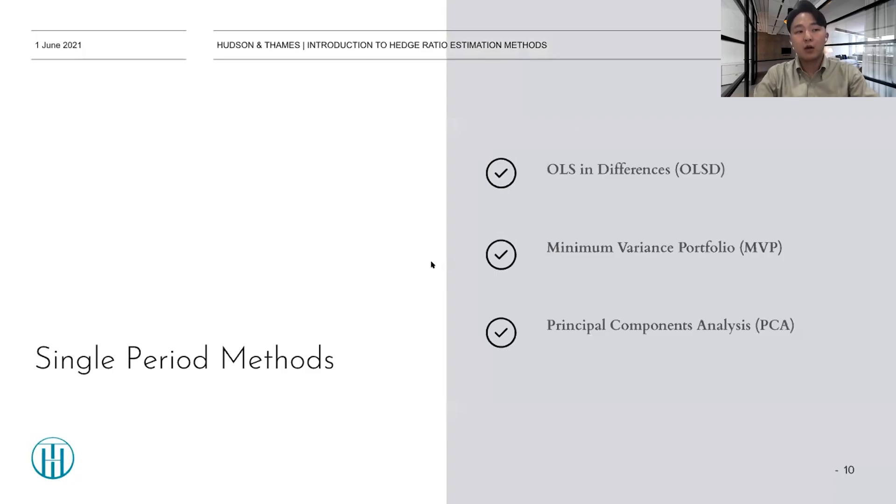So, there are a lot of single period methods out there. And here, I brought three well-known methods in the single period. OLS in differences, minimum variance portfolio, which is MVP, and PCA, the principal component analysis approach.